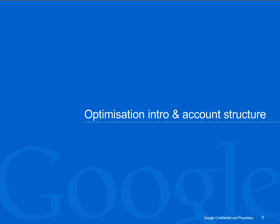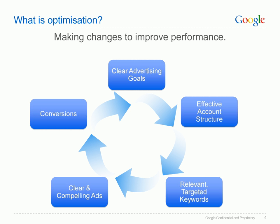So let's get started. Optimization is the process of making changes to an account to improve its overall performance. Optimization is a cyclical process, starting with ensuring that clear advertising goals are defined for your campaigns.